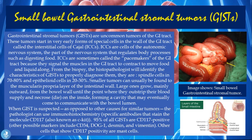Small bowel gastrointestinal stromal tumors, or GISTs, are uncommon tumors of the GI tract. They start in very early forms of specialized cells in the wall of the GI tract called the interstitial cells of Cajal. These are cells of the autonomic nervous system — the part that regulates body processes such as digesting food. The interstitial cells of Cajal are sometimes called the pacemakers of the GI tract because they signal the muscles to contract and move food and liquid along. From biopsy, histopathologists identify spindle cells in 70 to 80 percent of cases, and epithelioid cells in 20 to 30 percent.